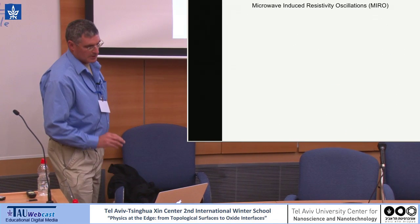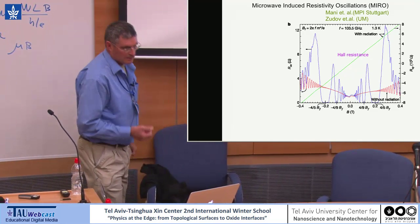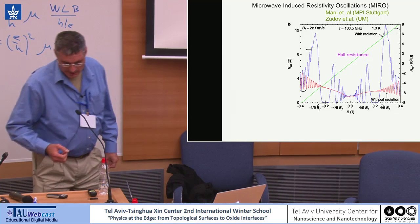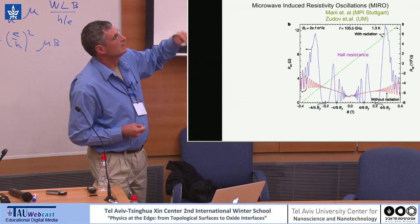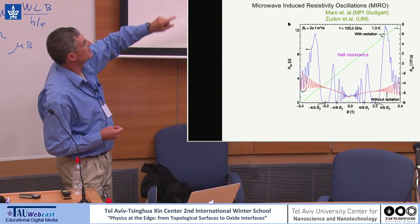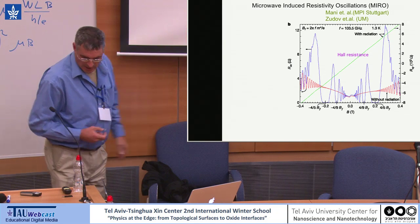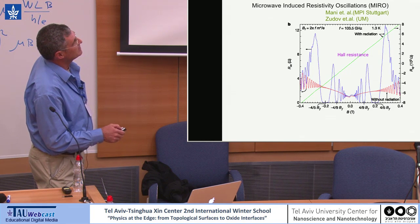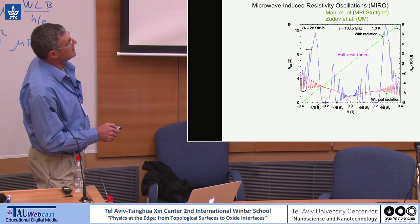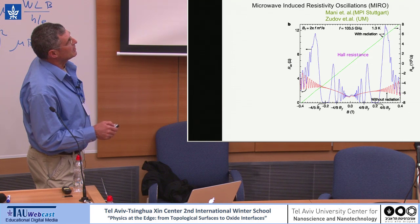In the case of the microwave-induced resistance oscillations, which prompted us to think about Floquet, the experimental signatures were very striking. Looking at the red line — the system which is not irradiated — you see R_xx versus magnetic field. In the region of weak magnetic fields, you hardly see any Shubnikov-de Haas oscillation. At strong magnetic fields you see the Shubnikov-de Haas oscillation — this is the region of quantum Hall states — and these are the high Landau-level states.